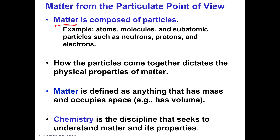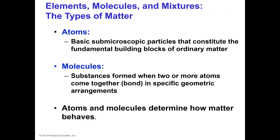Matter is defined as anything that has mass and occupies space — or another way of saying that, has volume. So mass and volume must be a characteristic if it's going to be matter. Chemistry is the study of matter, and we try to explain how that matter is working, why it does what it does, and how it comes together.